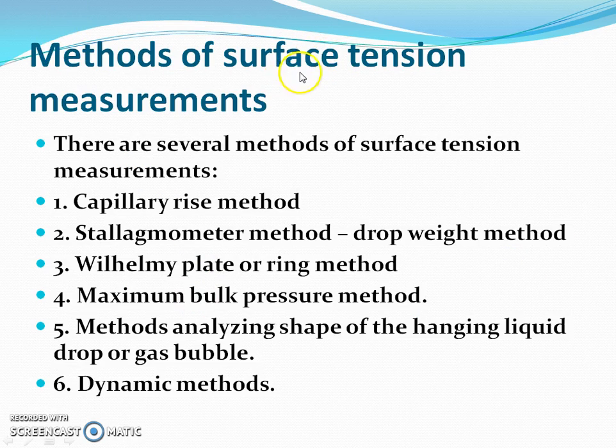There are different methods of surface tension measurement. Very first is the capillary rise method. Another is the Stalagmometer method, which is also known as drop weight method. Third one is the Wilhelmy plate or ring method. Next is the maximum bulk pressure method. Another is the method analyzing shape of the hanging liquid drop or gas bubble.